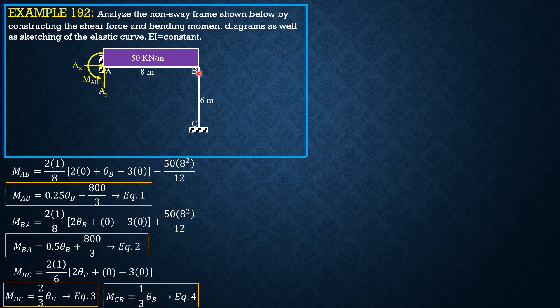By equilibrium, MBA plus MBC equals 0. So 0.5θB plus 800 over 3 plus two-thirds θB equals 0. From here we can solve θB, which equals negative 1600 over 7EI.